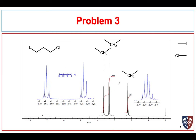Looking at the NMR spectrum, we have a 2:2:2 integration pattern. A triplet means whatever that signal is, it's coupled with two neighboring protons — so it could be a CH2 coupling with another CH2. Our final peak has 5 lines, consistent with a CH2 group between two other CH2 groups. This structure is completely consistent with the data we've been given.